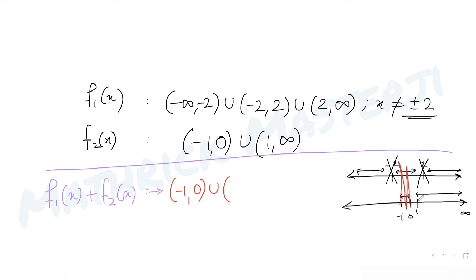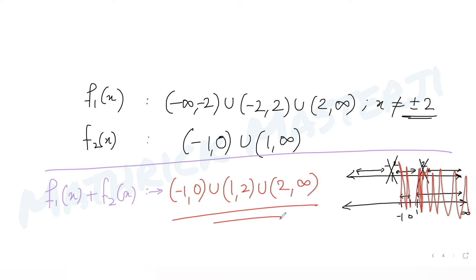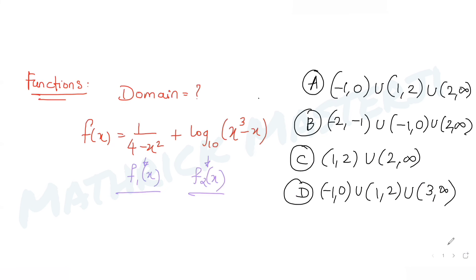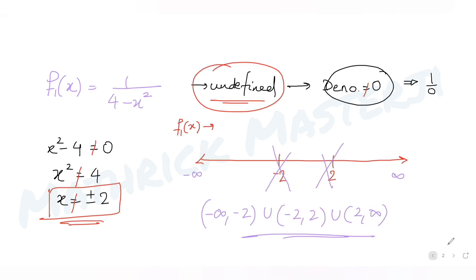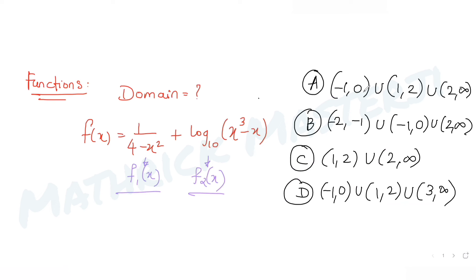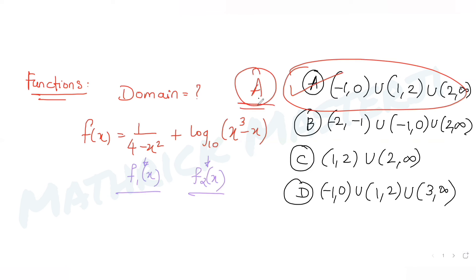So the intersection gives us (-1, 0) ∪ (1, 2) ∪ (2, ∞) as the domain of the full function. Looking at the answer choices, this matches option A: (-1, 0) ∪ (1, 2) ∪ (2, ∞). So option A is the correct answer.